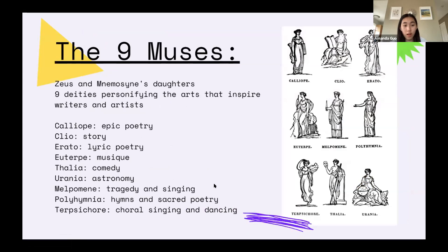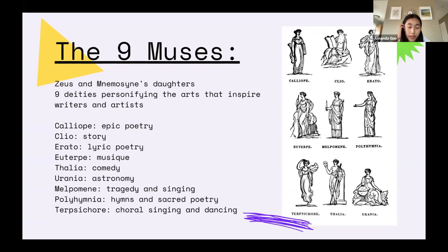Now we're going to talk about the nine Muses. The Muses are Zeus and Mnemosyne's daughters — nine deities personifying the arts that inspire writers and artists. So, for example, if I want to write a story, I will call upon the Muses and hope they inspire me. The first is Calliope, the muse of epic poetry; then Clio, the muse of story; Erato, the muse of lyric poetry; Euterpe, the muse of music; Thalia, the muse of comedy; Urania, the muse of astronomy; Melpomene, the muse of tragedy and singing; Polyhymnia, the muse of hymns and sacred poetry; and lastly Terpsichore, the muse of choral singing and dancing.